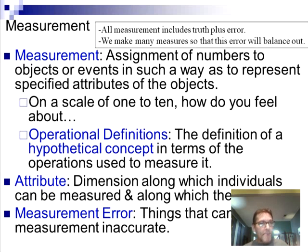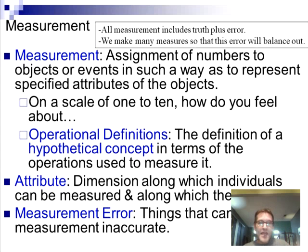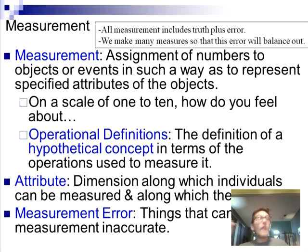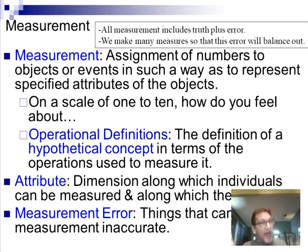What we find is that all measurement has two components: truth plus error. My operational definition of happiness was number of smiles per hour. That measure has two components: number of smiles per hour truly measures happiness, but smiles can also be produced for other reasons, such as politeness — and that would be measurement error. Any definition we use of a hypothetical construct will always include truth and error.